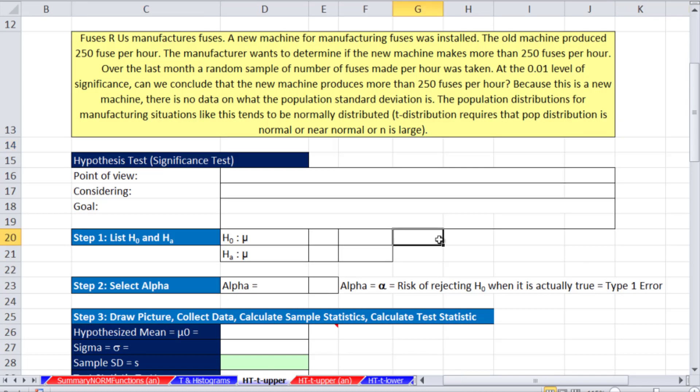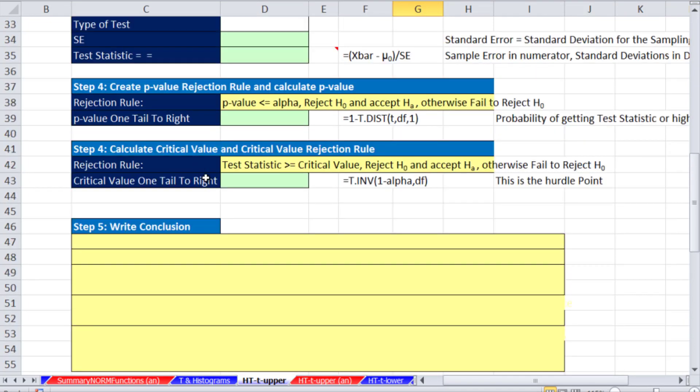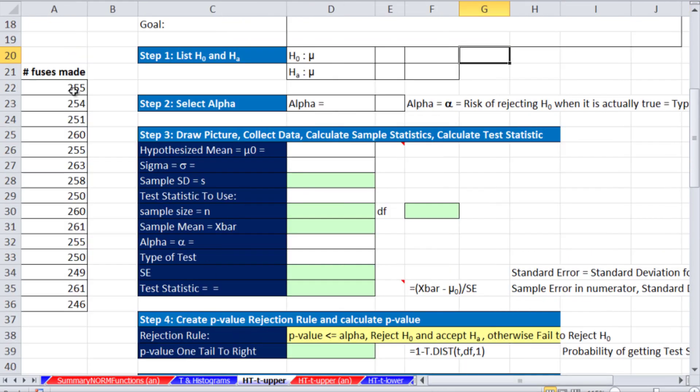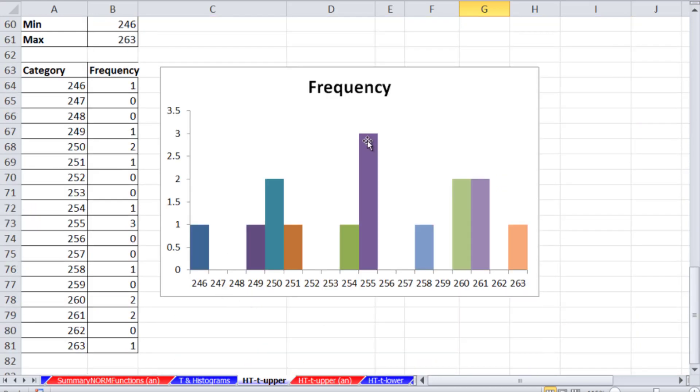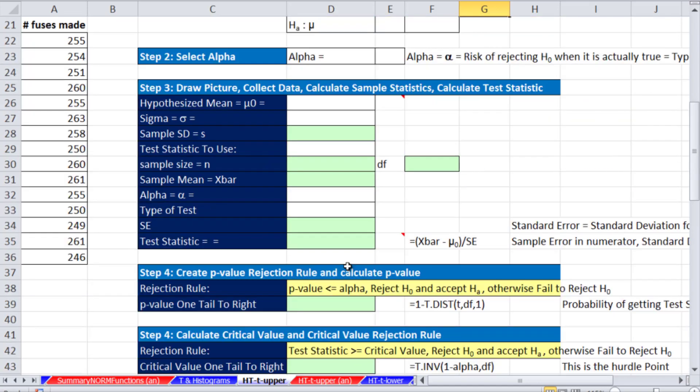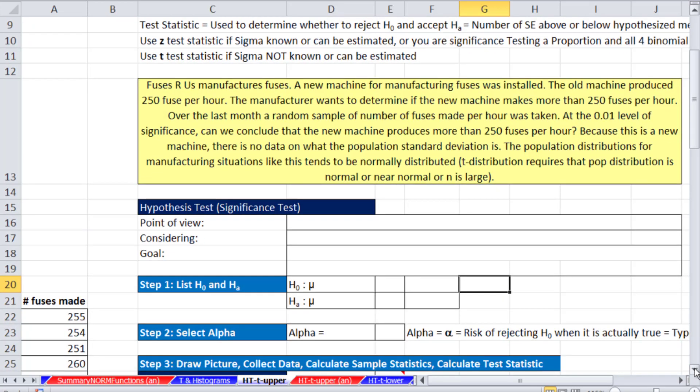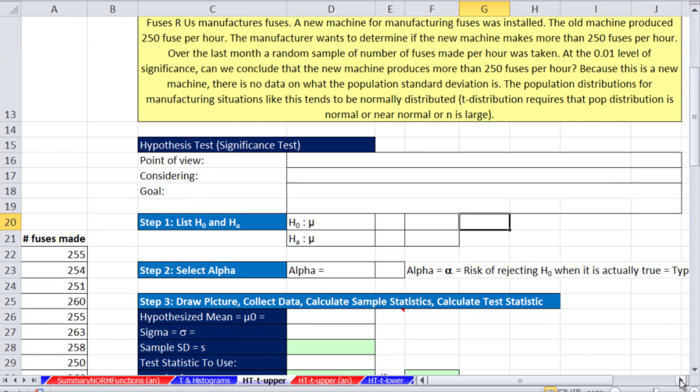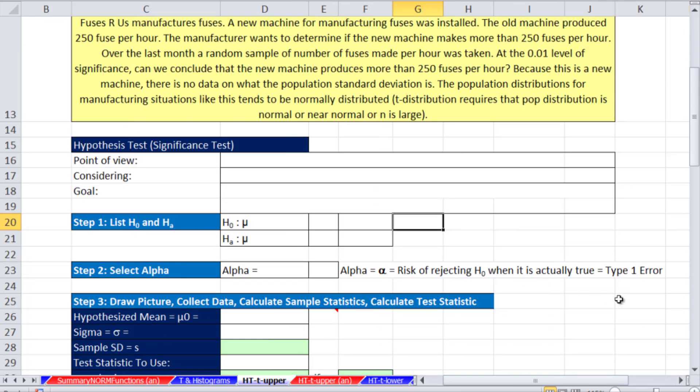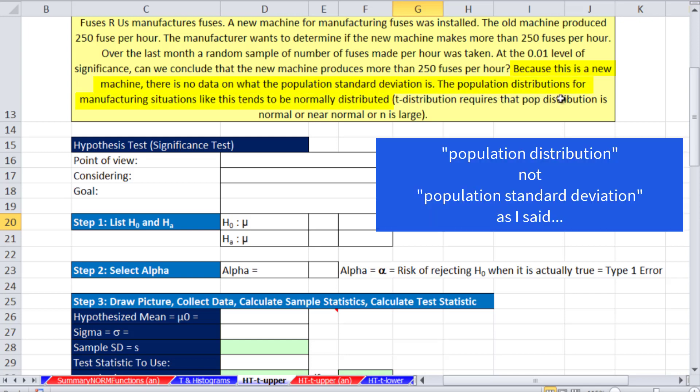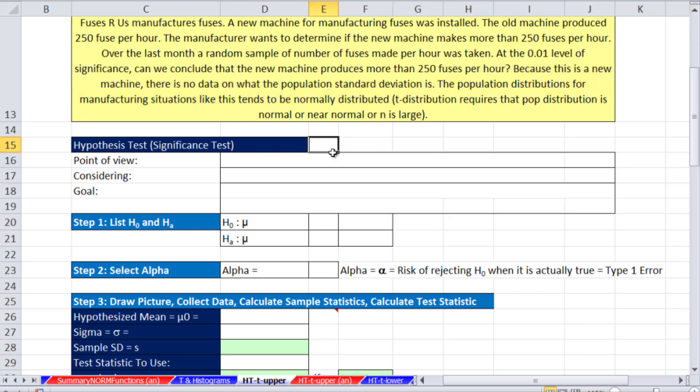Let's go over here. This is for fuses. Where is our sample? Our sample's right here, and I actually ran a little histogram. It kind of looks normally distributed, and I don't see any outliers. Now, for this example, the manufacturer has been doing this a long time, and they know that the distribution for this type of situation is normally distributed. Because this is a new machine, there's no data on what the population standard deviation is. So, we're going to use our t.